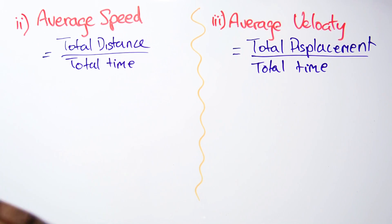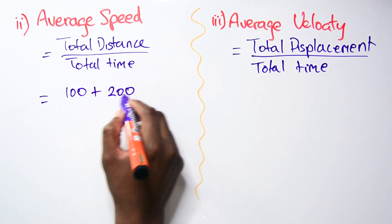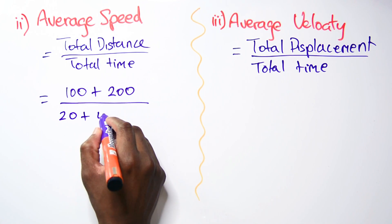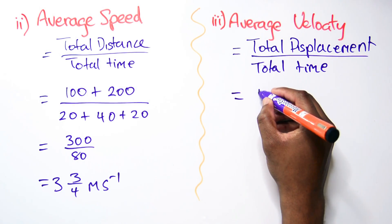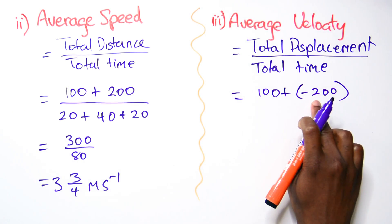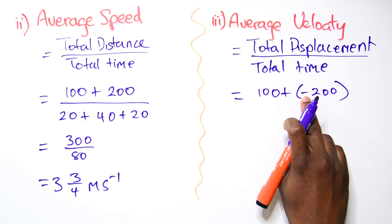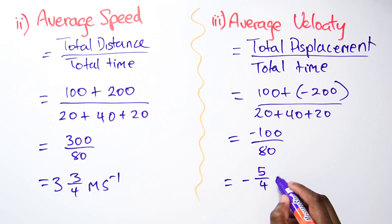When I substitute, I have 100 going north plus 200 going south divided by total time, which gives me 3.75 meters per second. When solving average velocity, a key difference is that this displacement went south, so I need to indicate that by a negative sign, giving an average velocity of negative 5/4 meters per second. This tests the difference between speed and velocity.